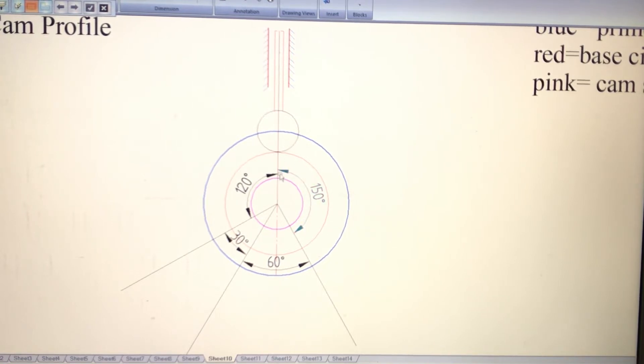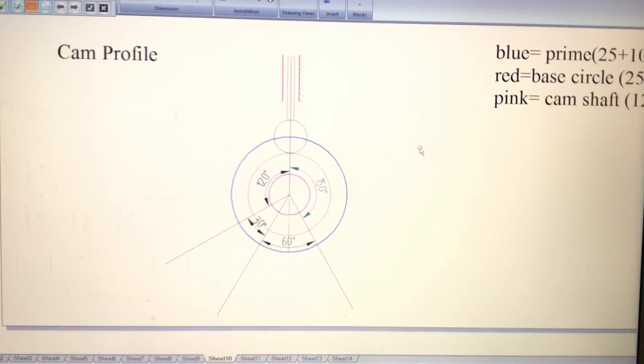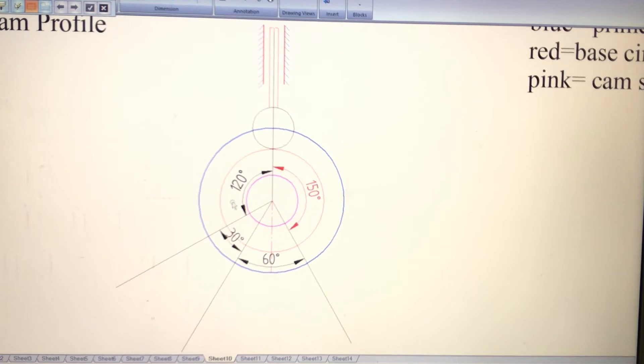After creating this, from the vertical axis you measure 120 degrees in anti-clockwise direction, because the cam is rotating clockwise. Now, 120 degrees is the angle of rise. Next 30 degrees for first dwell, next 60 degrees for angle of return, and the remaining 150 degrees is for second dwell.